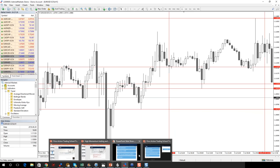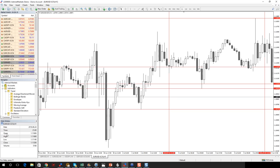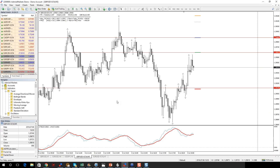Now let's move on to ATR breakouts. For this you need an ATR indicator — not just an ordinary indicator, but one that all Price Action Training School students should use on their charts by default. It's called the IATR indicator. If you don't have it, just send me an email and I will send it over. It's set to 7. You also need a standard ATR set to 7, and then ATR 14 overlaid by EMA 7, plus fractals. Now I will open the chart and show you how to install those indicators easily.